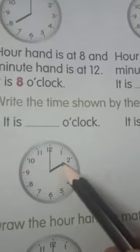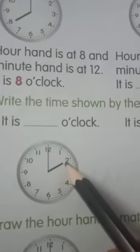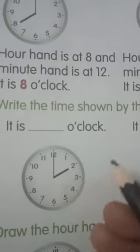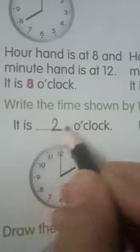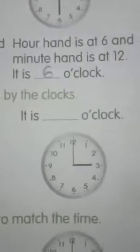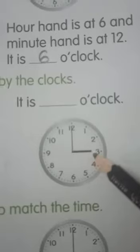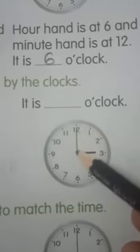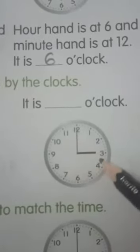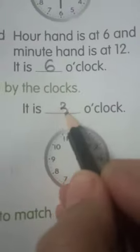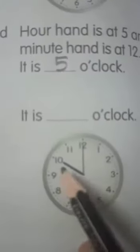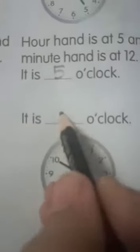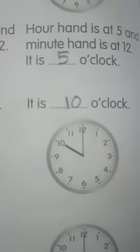Now, look at this. This hour hand is on the number 2 and the minute hand is at 12. So, it is 2 o'clock. And here, the hour hand is at 3 and the minute hand is at 12. It is 3 o'clock. And the hour hand is at 12 and the minute hand at 12. It is 10 o'clock.